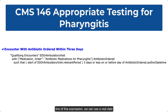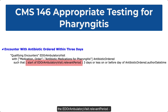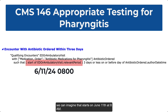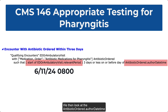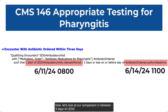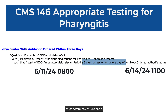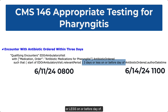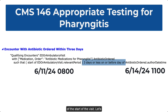If we look at the last line of this expression, we can use a real date example to illustrate the point. The start of the ED or ambulatory visit dot relevant period we can imagine starts at June 11th at 8 a.m. The antibiotic-ordered dot author date time we can imagine was on June 14th at 11 a.m. That gives us two date time points. Now let's look at our comparison in between: three days or less, on or before day of. We are looking for antibiotic orders that were authored within three days of the start of the visit.